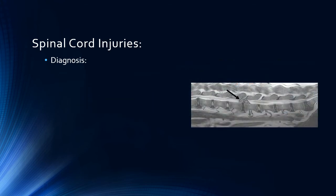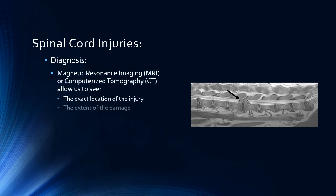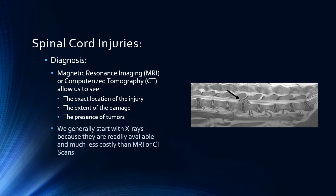If we cannot determine the location or nature of the injury with radiography, we turn to magnetic resonance imaging — MRI — or computerized tomography — CT scans. These modalities can tell us the exact location of the injury, the nature of the injury, and whether it is a disc, tumor, or fracture. You may be asking why we don't just jump to the MRI or CT scan. The reason is generally expense and availability: MRIs or CT scans require full anesthesia and may cost up to ten times as much as radiography.